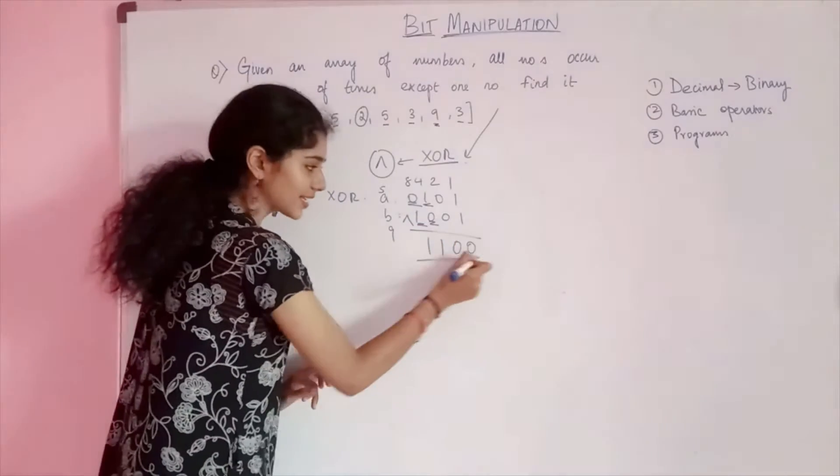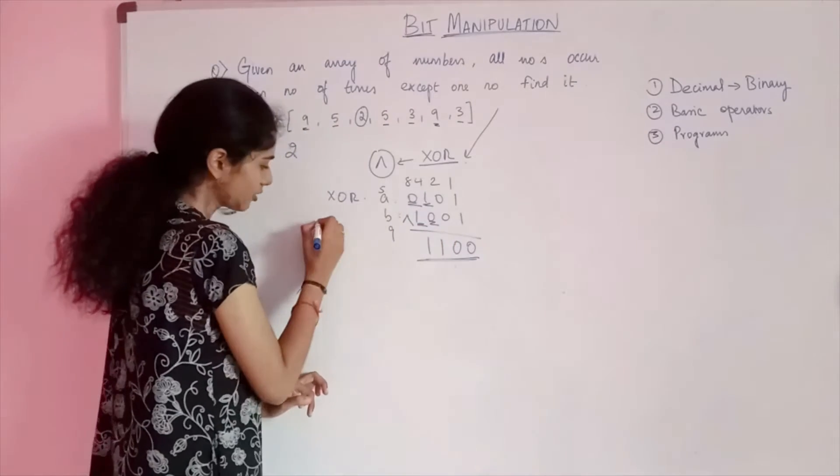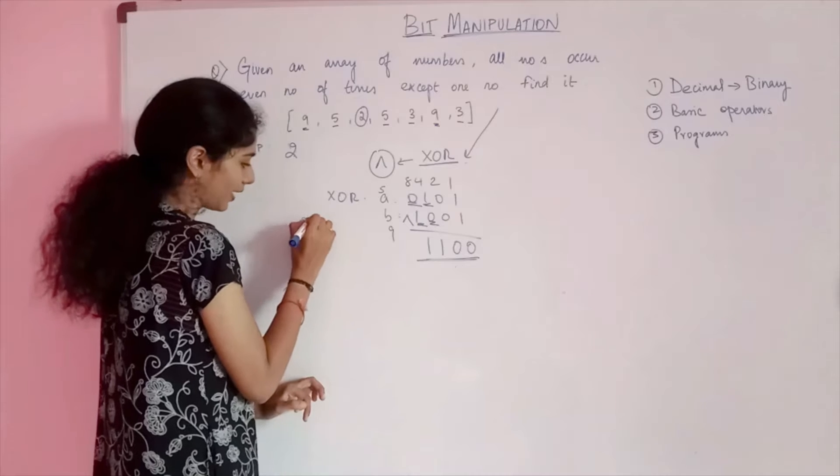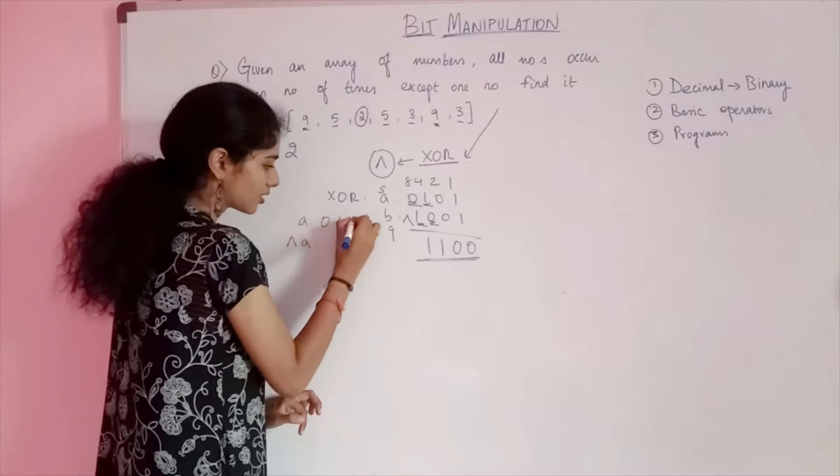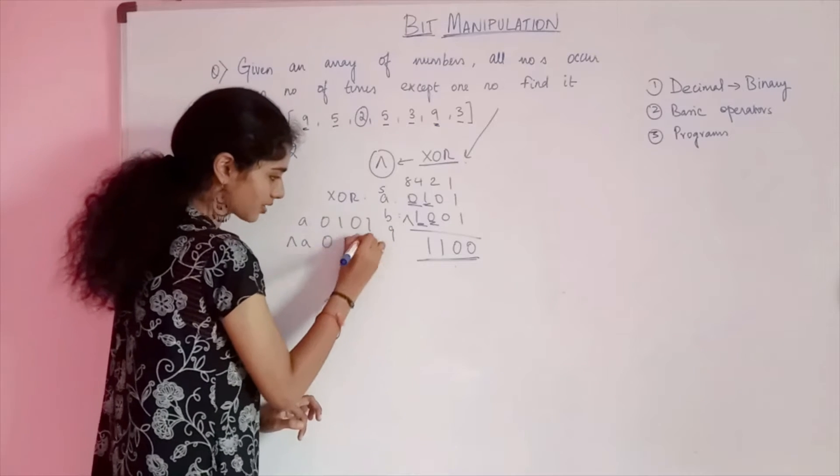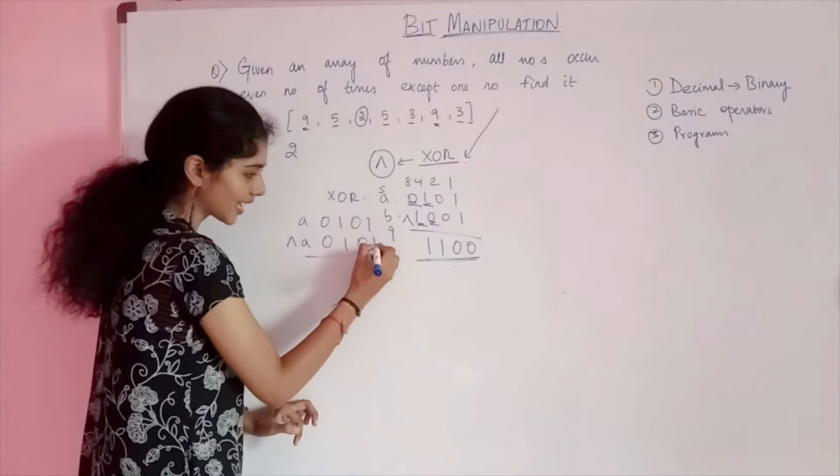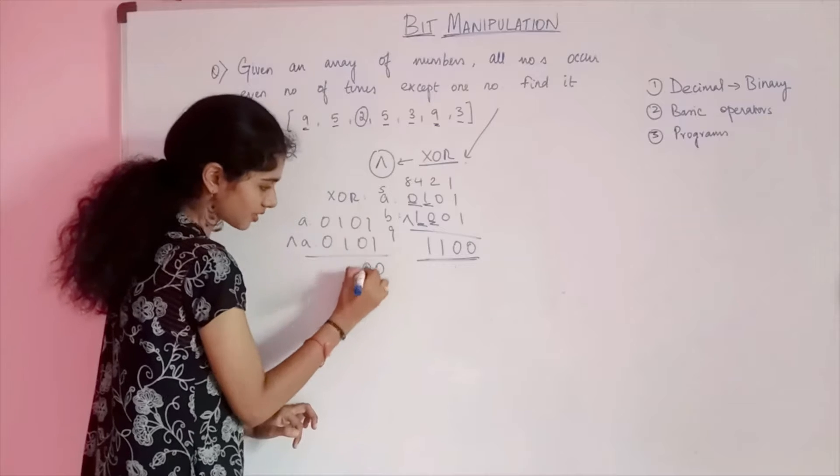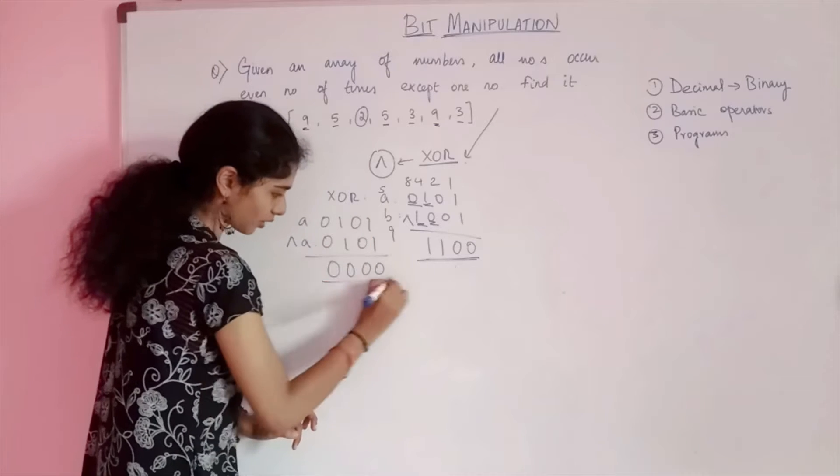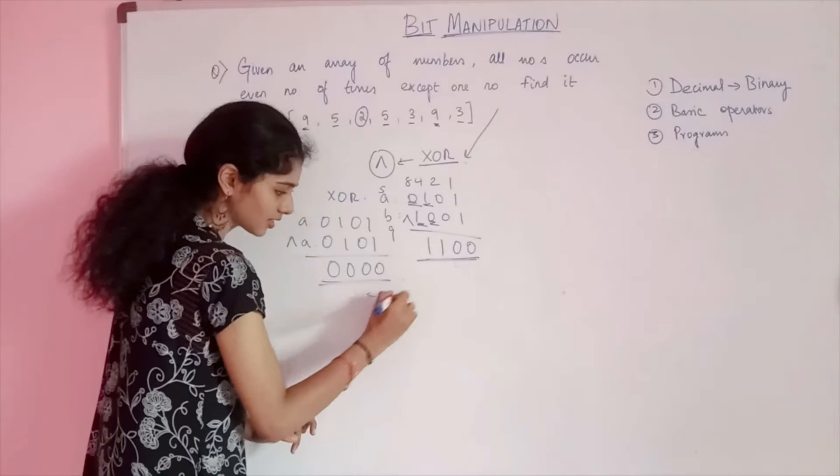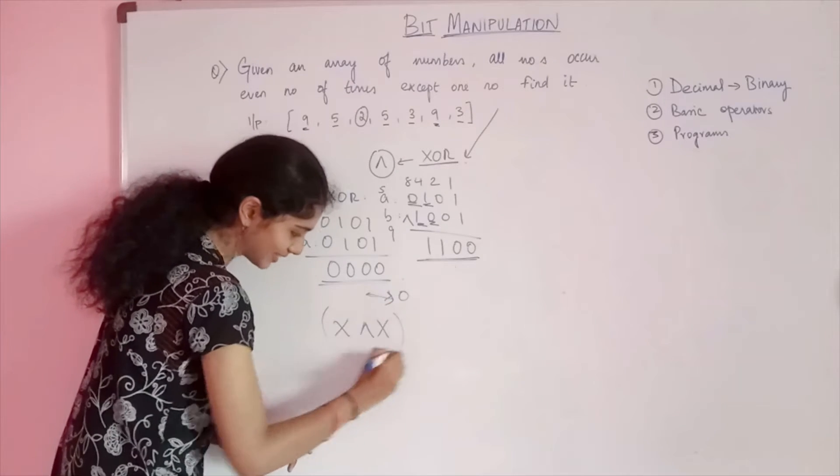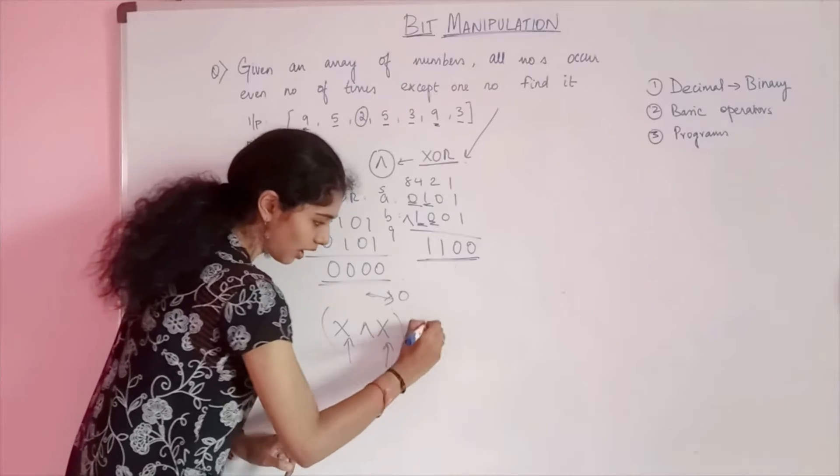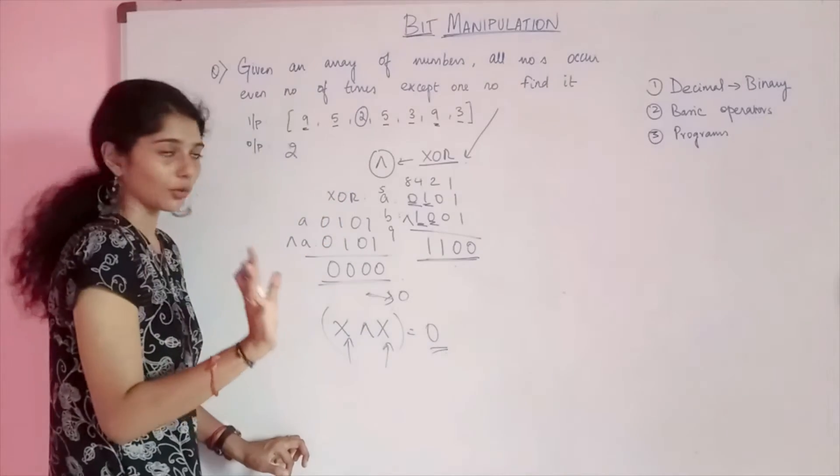This is the basic idea of XOR. So suppose that if I do it for A and B, A XOR B, 0101 XOR 1001. Same is 0, same is 0, same 0, same 0. So the output will be 0. It simply tells any number XOR with itself will give you an output of 0.